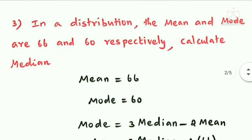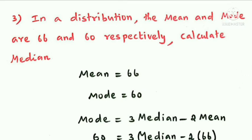In a distribution, the mean and mode are 66 and 60 respectively. Calculate the median. The mean is 66 and the mode is 60. Using the empirical relationship between mean, median, and mode: Mode = 3 Median − 2 Mean.